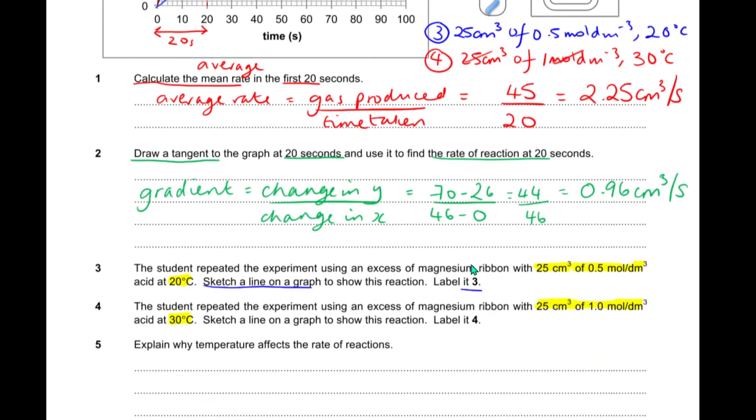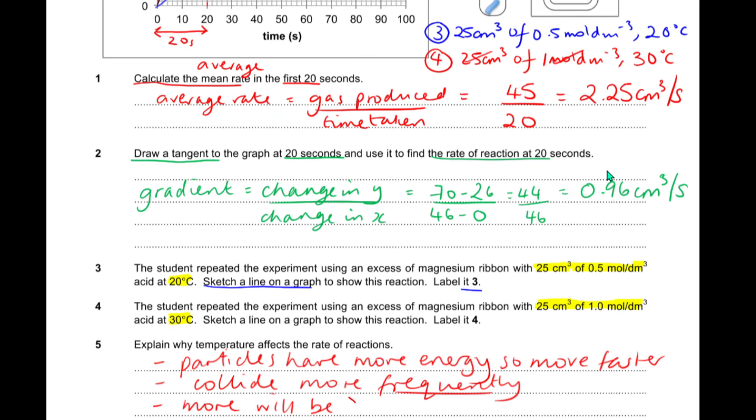The final question on the sheet is asking us to explain why temperature affects the rate of reactions. Well, this is where we need to be thinking about the energy. The particles have more energy, so move faster. They will therefore collide more frequently. We must use that word frequently. We can't just say collide more. And more collisions will be greater than activation energy, or successful. So, let me know if any of that didn't make any sense, or if you need any of it explaining again. Send me a message and I'll get back to you.